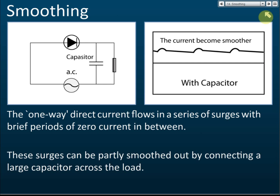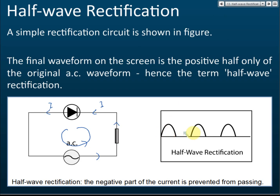With half wave rectification, the waveform shows: current increases and decreases, then no current, then increases and decreases again, then no current. This means the supply of current is not steady — current, no current, current, no current. This is a non-steady direct current, and we don't want this; we want a continuous, steady current.